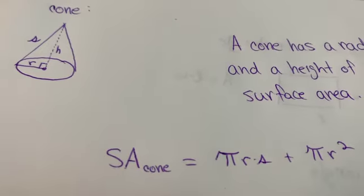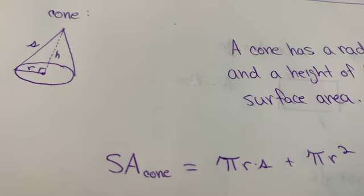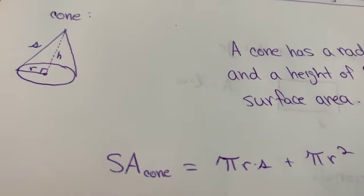The πrs is what we call the lateral surface area. It's the surface area around the sides of this cone, if you want to describe it that way.